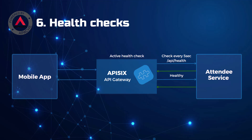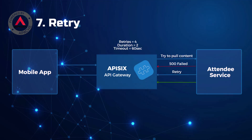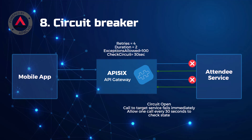Number seven: retry. This resiliency design pattern enables an application to handle transient failures when it tries to connect to a service by transparently retrying a failed operation, maybe with or without delay. This can improve the stability of your application. You can implement a retry mechanism right at the API gateway level to specify duration, number of retries, and timeouts.